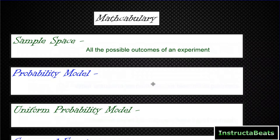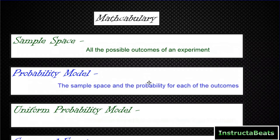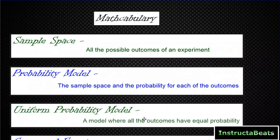A probability model — you guys have been doing this for a few lessons now, even though we hadn't named it yet — is when you have the sample space and the probability for each of the outcomes. A uniform probability model is a model where all the outcomes have equal probability, like when we rolled the dice and the probability for landing on each side was 1/6. That's what we call a uniform probability model.